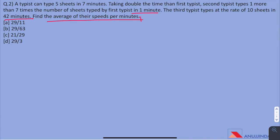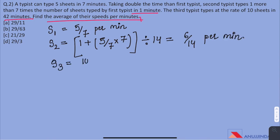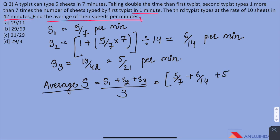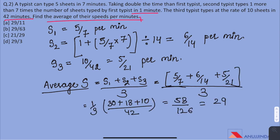Now we'll start with the first typist. Let his speed be S1. As per the question, it is 5 by 7 per minute. For second typist, read the question carefully. He types one more than 7 times of what the first typist types in 1 minute in double the time which is 14 minutes. So when we will divide it by 14, we'll get the speed of the typist per minute. Come out to be 6 by 14 per minute. Speed of the third typist would be 10 by 42 which is 5 by 21 per minute. Average of their speeds would be 5 by 7 plus 6 by 14 plus 5 by 21, which comes out to be 29 by 63. So the answer is B which is 29 by 63 sheets per minute.